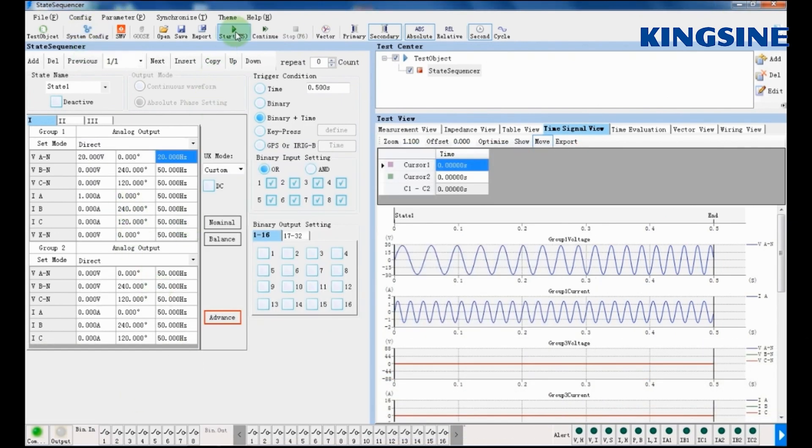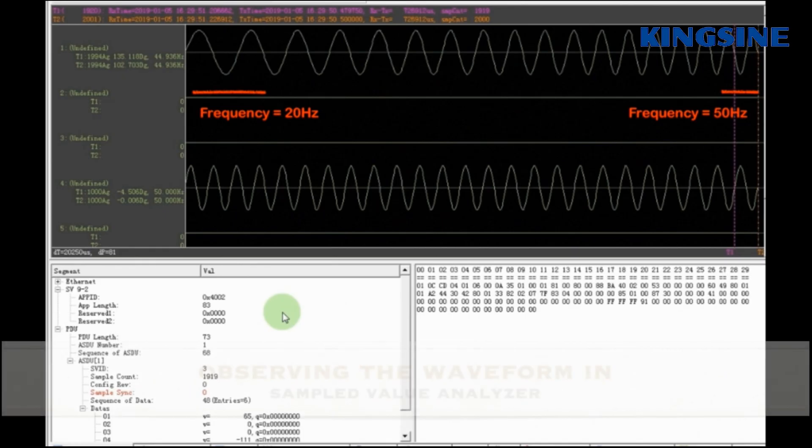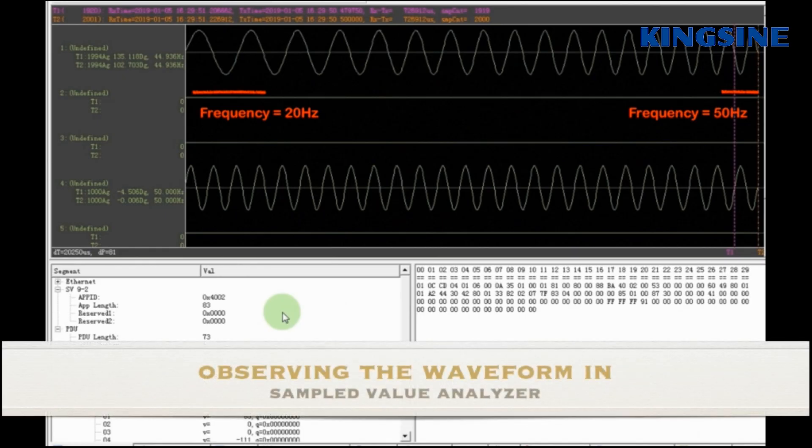As we press the play button, the same waveform can be observed in sampling value analyzer also. The waveform is a voltage signal undergoing DF by DT with 16Hz per second increase.